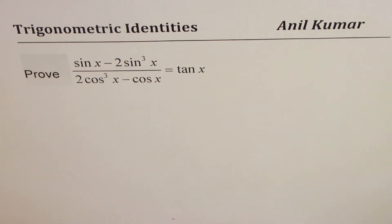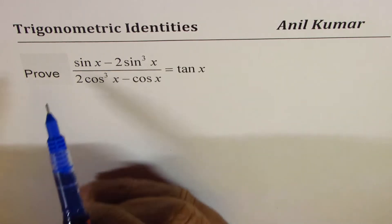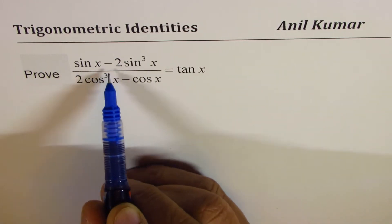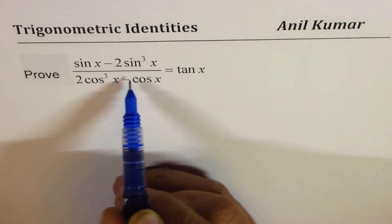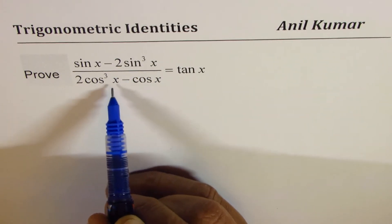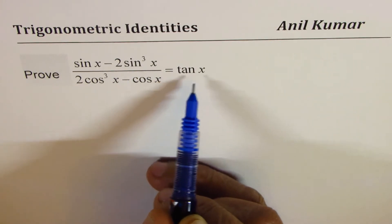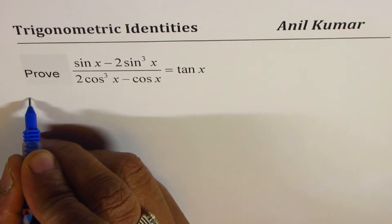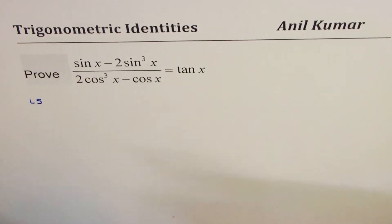I am Adil Kumar. In this particular video, I will take three very important trigonometric identities. They are slightly difficult to work with. Let us see how to apply different strategies to prove such identities. The first one here is to prove sine x minus 2 sine cube x divided by 2 cos cube x minus cos x equals to tan x. We should begin with the left side since it is more complicated.